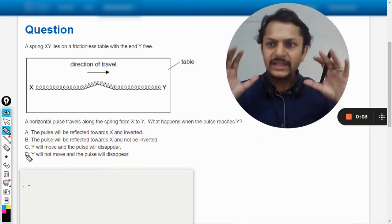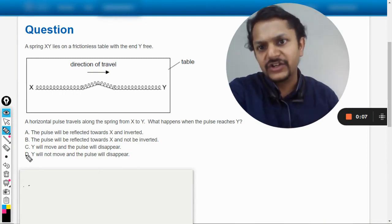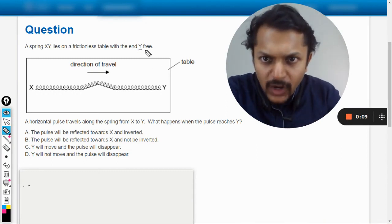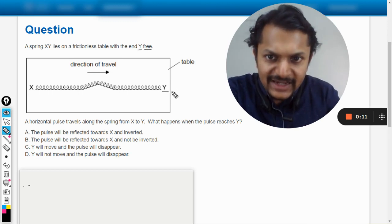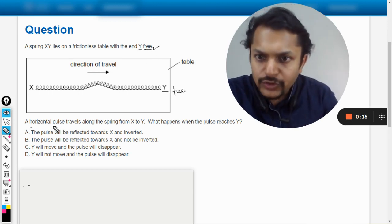Okay, let us see what is there in this question. A spring XY lies on a frictionless table with the end Y free. So this end is free, and it is already given in the question. A horizontal pulse travels along this spring from X to Y.